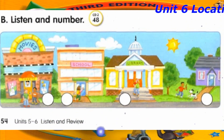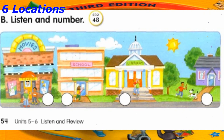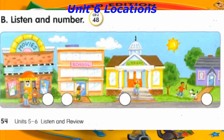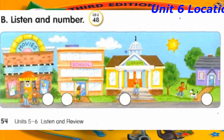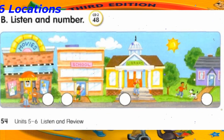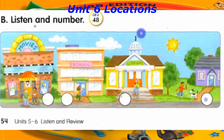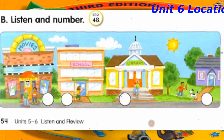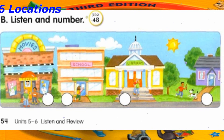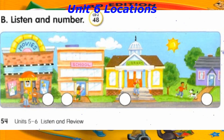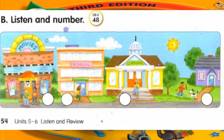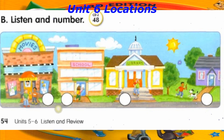Track 48. B. Listen and number. Number 1: Where is he? He's at home. Number 2: Where is she? She's at school. Number 3: Is she at home? No, she isn't. She's at the library. Number 4: Are they at the park? No, they aren't. They're at the movies.